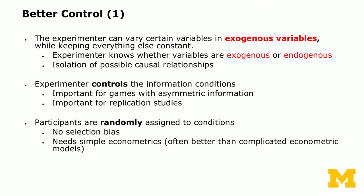In an experiment, an experimenter can first identify which variables are endogenous versus exogenous, and through careful experimental design, isolate the possible causal relationships. A second aspect of better control is that the experimenter controls the information decision — deciding how much information to release to participants, which is also important for replication. The third aspect is that participants are randomly assigned to conditions, so whether you are in the treatment or control group is determined by a randomizing device controlled by the experimenter. Through randomization, we can eliminate selection bias, and as a result, carefully designed experimental data requires only simpler econometrics or data analysis methods.